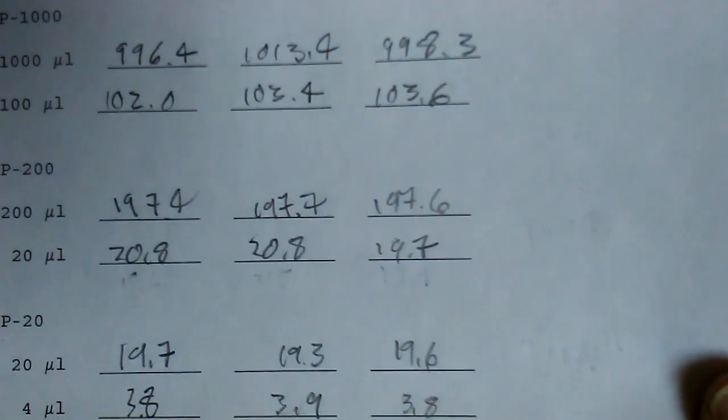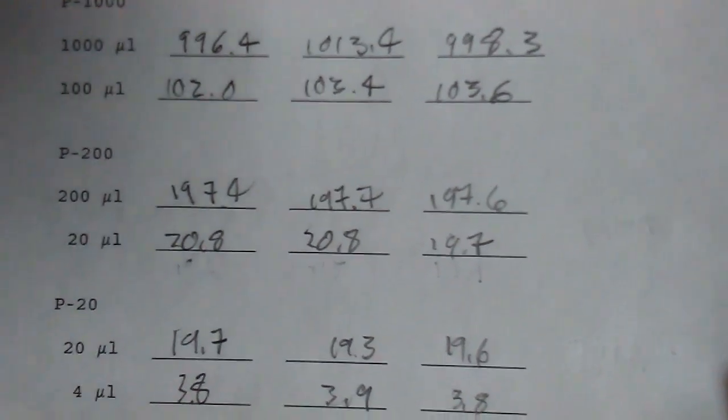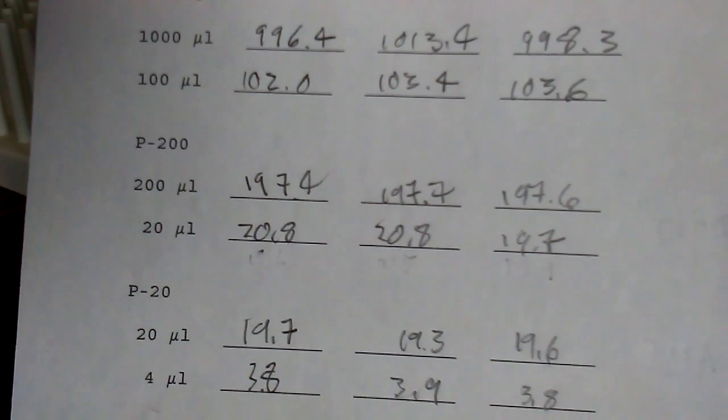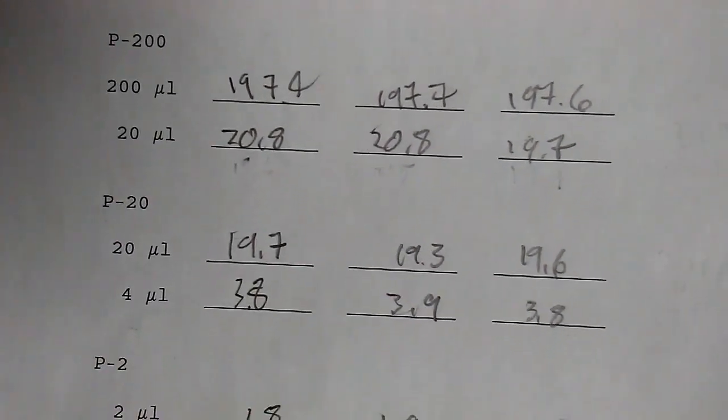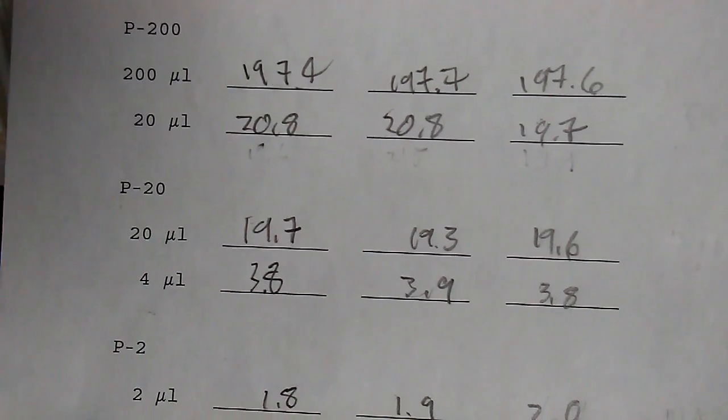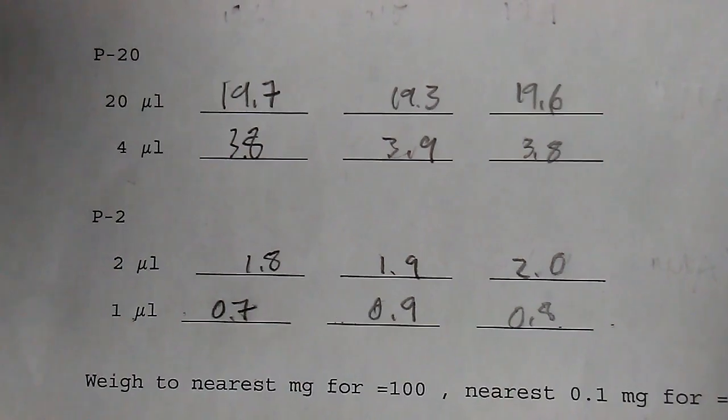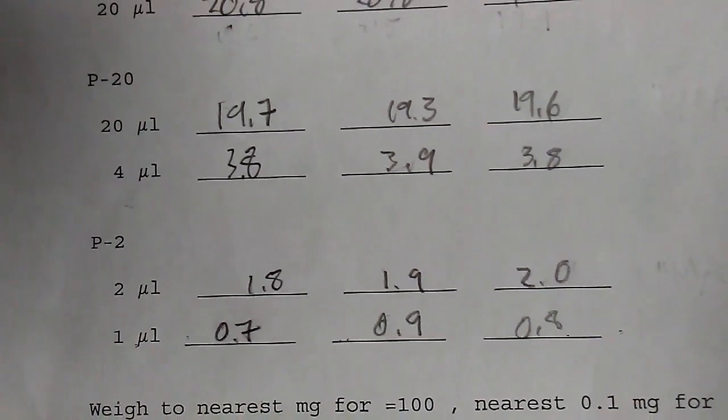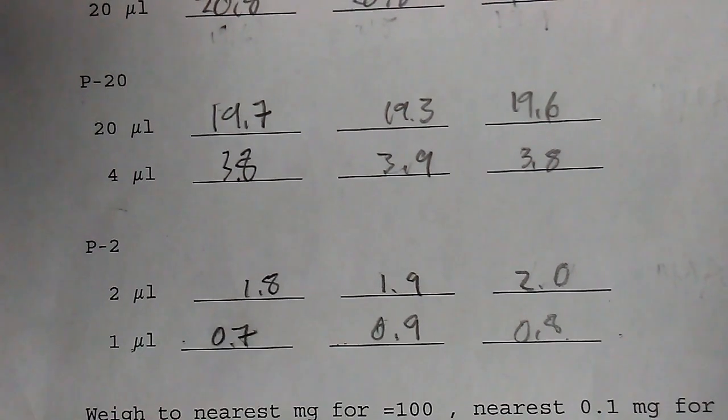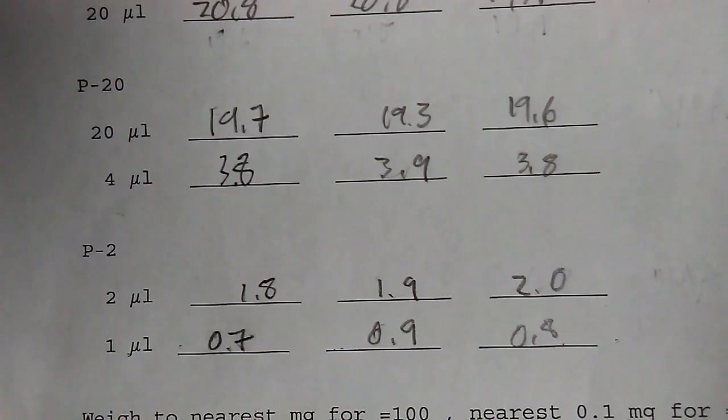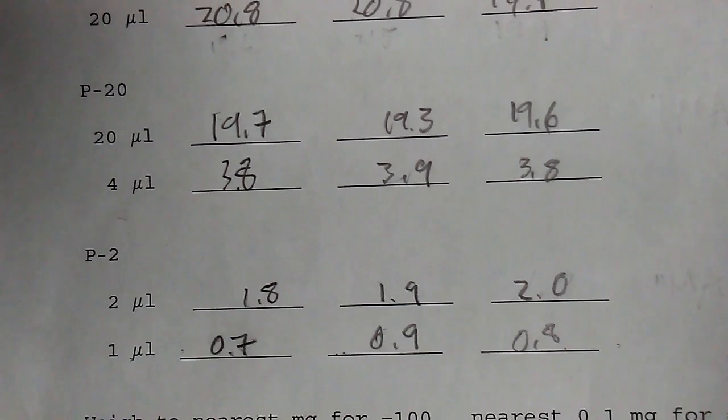So here are some typical results for a set of pipettes. You can decide for yourself what degree of error you're willing to accept, but I would say you want within 2% at the maximum volume, within 4% or 5% at the lower volume. For very small volumes, you can expect to be off by a few tenths of a milligram. So at the low end, weighing 1 or 2 microliters, the error on a percentage basis will be a little larger.